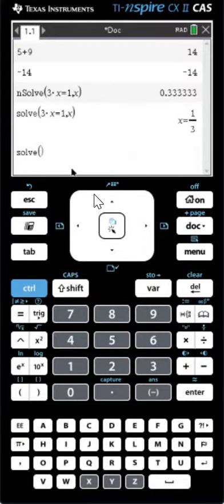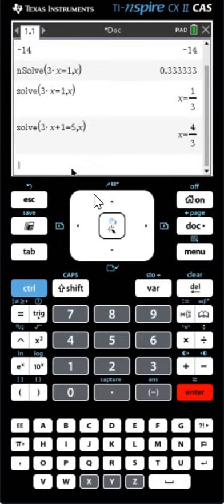Click it. Solve, for example, 3x plus 1 is equal to 5, comma x. Always put the variable there. Press enter, 4 over 3.